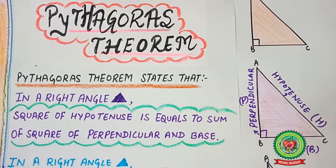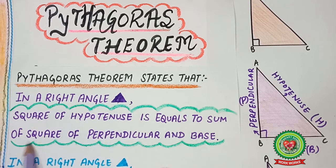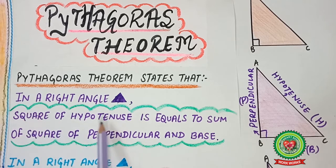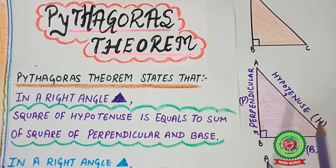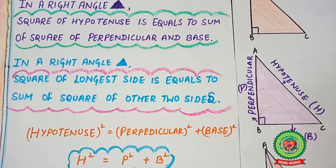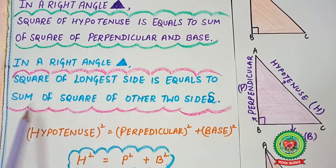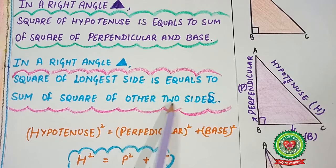Now let's talk about Pythagoras theorem. Pythagoras theorem states that in a right-angle triangle, the square of the hypotenuse is equal to the sum of the square of the perpendicular and the base. In other words, in a right-angle triangle, the square of the longest side is equal to the sum of the squares of the other two sides.